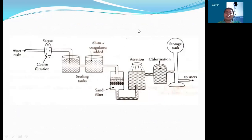This is a complete diagram for the domestic water treatment. First, water is passed through the screens where we remove all the floating materials and solid materials. Then the water passes through the sedimentation tanks with coagulants, where we remove all the colloidal impurities and finally get water which is free from dissolved and colloidal impurities. This water still contains some microorganisms, which we can remove by the chlorination or disinfection process. Then finally we get water which is useful for human consumption. Thank you.